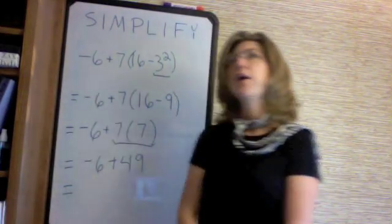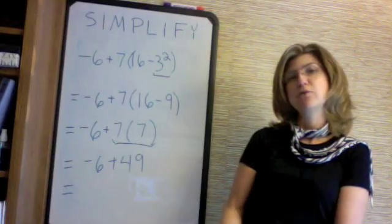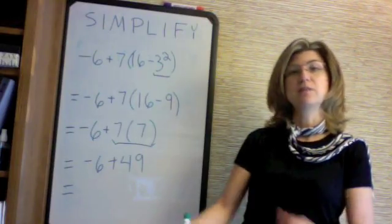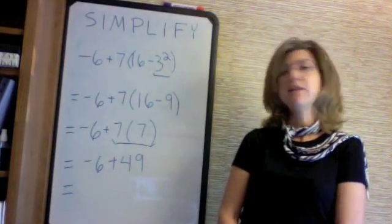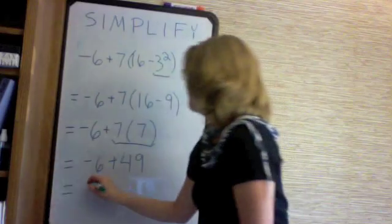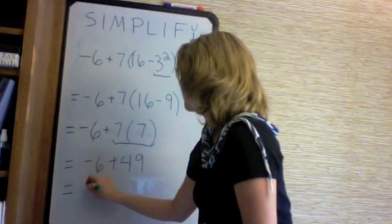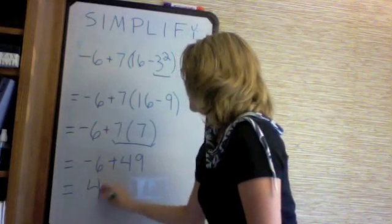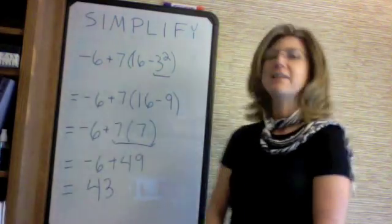Minus 6 plus 49 — well, if I owe 6 dollars and I have 49 dollars, once I have paid off my debt, what will I have left? Minus 6 plus 49 is 43. And that is the answer.